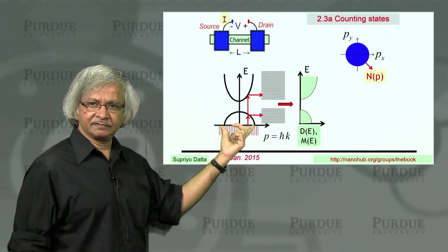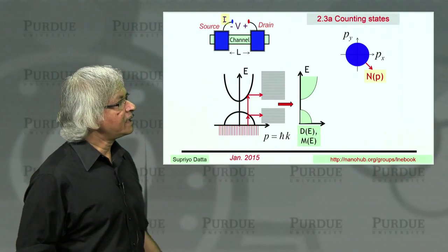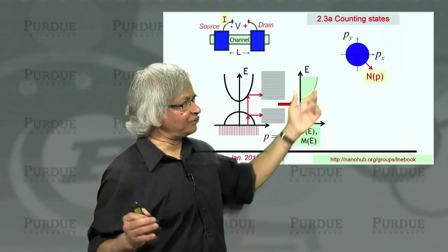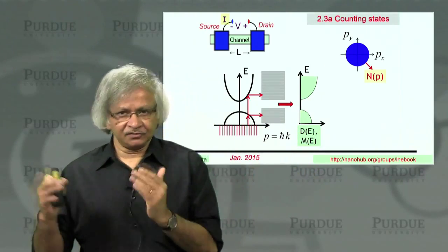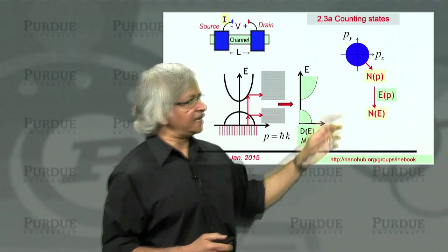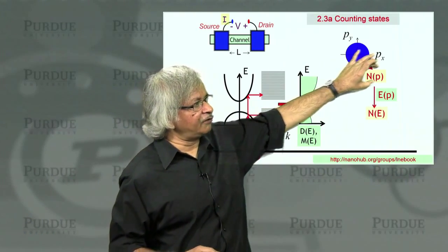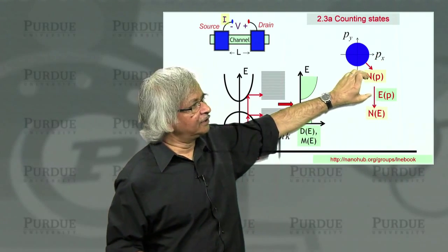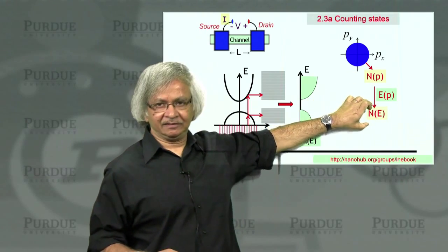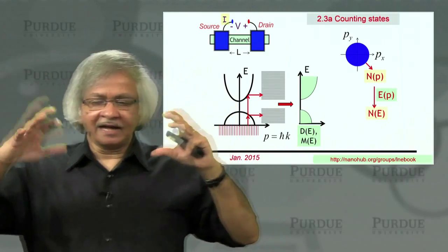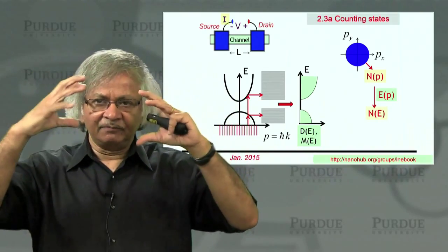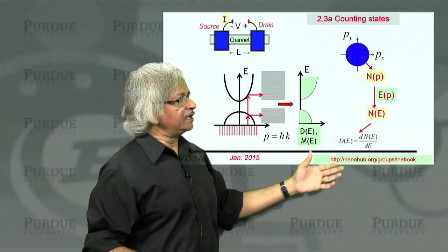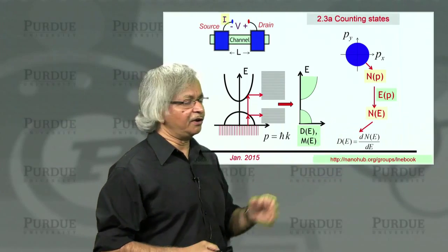Once you have this N(p), that's not the end of the story, because what we really want to do eventually is to get to density of states and number of modes. The way it works is that given this N(p), and since we know the energy momentum relation, you could eliminate the p and get N(E), which tells you how many states have an energy less than some value. From that, you can deduce the density of states. Density of states is like the derivative of that.